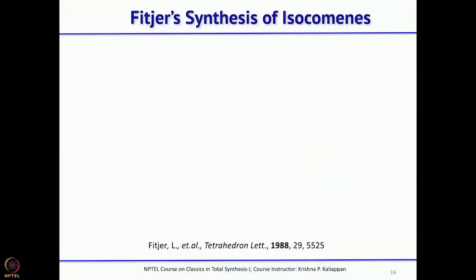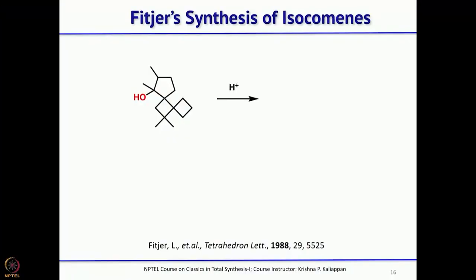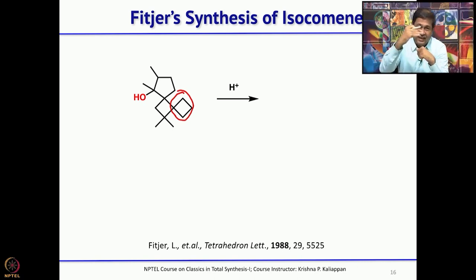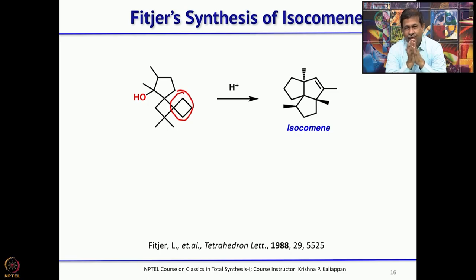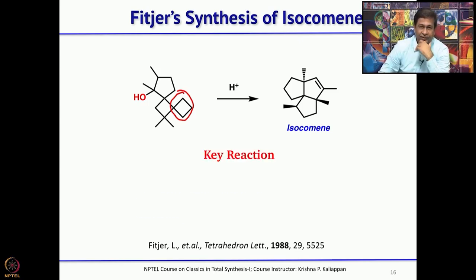The second synthesis was reported by Fider. Here again the key reactions are ring enlargement and Wagner-Meerwein type rearrangement. Looking at the key intermediate, you can see 2 four-membered rings: 2 four-membered rings spirofused, with one of the 4-membered rings spirofused with a 5-membered ring. This intermediate upon treatment with acid gives isocomane — a very interesting sequence of reactions involving Wagner-Meerwein type rearrangement.